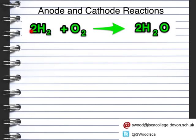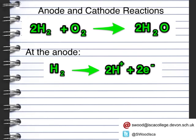We have our equation for the fuel cell: hydrogen reacts with oxygen to form water. At the anode, we have our hydrogen molecule, which hits the anode and loses two electrons that go around the circuit to provide the electricity — the potential difference. The hydrogen ions are then able to pass through the electrolyte, while the electrons go through the wires to power the circuit.